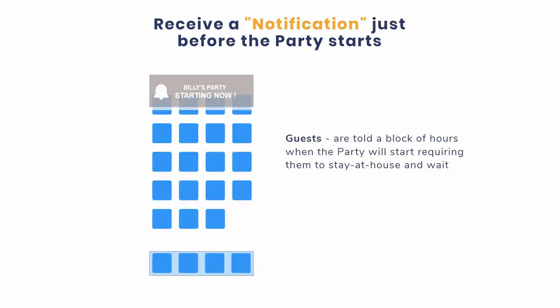There are two types of notifications. First, to announce if you've been invited to a party. The other is to let guests who were invited know when the party is starting. In either instance, members are not told when those announcements will come. They're only given a four-hour window, and they have to be home to receive them.